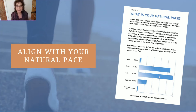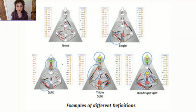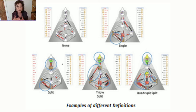If there are none, it means they're a reflector. In this graph that's being offered, it is an analysis of all the data of people that have run charts at the Jovian Archive website. They're looking at how many people fall into the different categories, and it's very easy to see that most people are either a single definition or a split definition. This chart shows you the five different types of definition — none, single, split, triple split, quadruple split — so you can get an idea of what we're looking at when I say the squares and triangles are colored in and how they connect to each other.